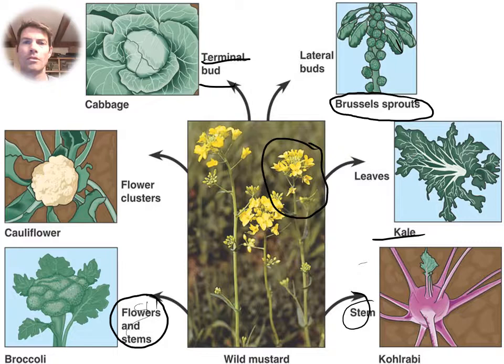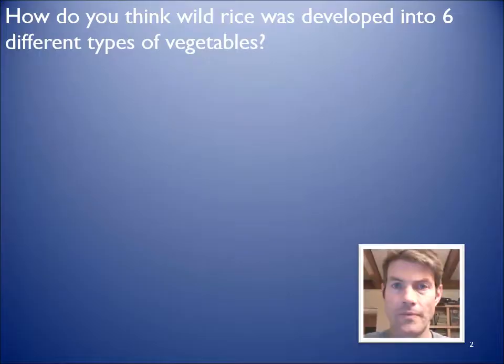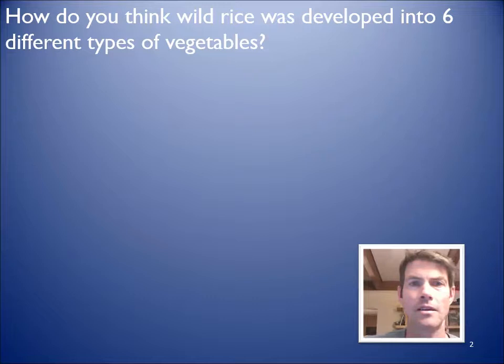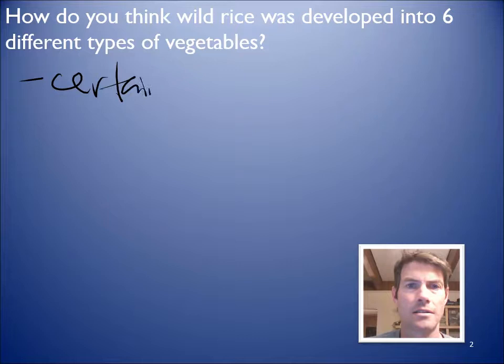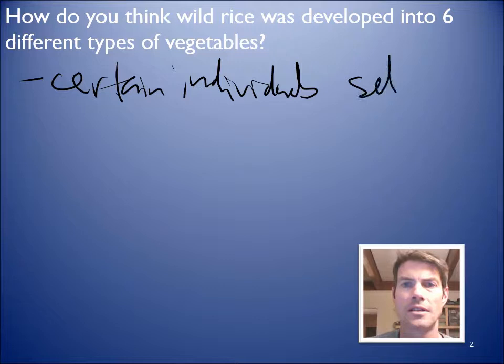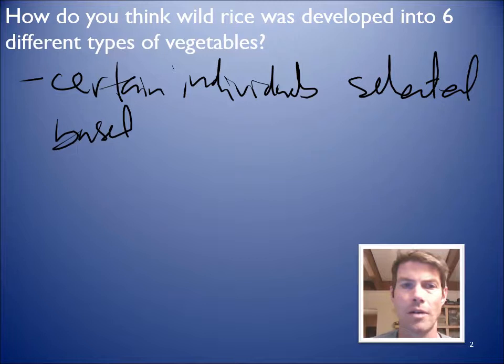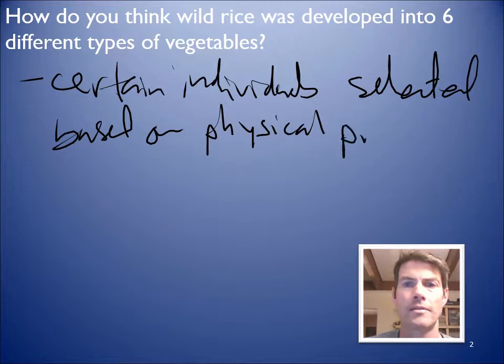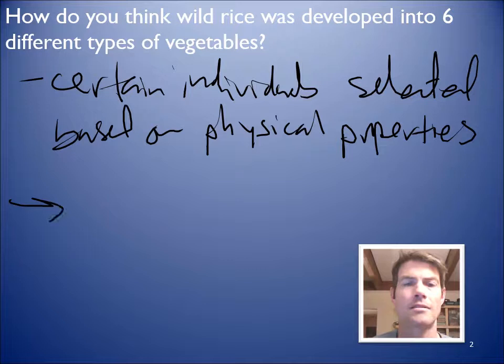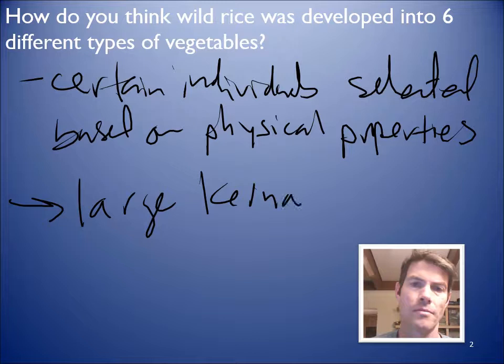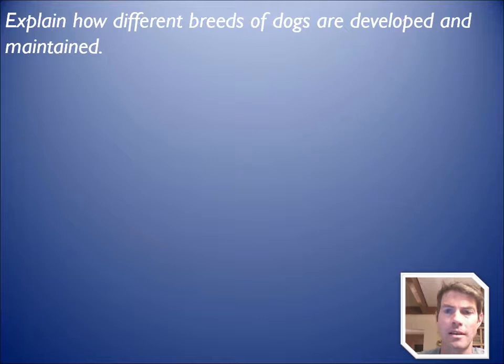And this is with humans acting over decades, which isn't a long time. Think about the earth and how old it is. So how do you think wild rice would develop? Certain individuals selected based on their physical properties - basically a large kernel. And you just keep breeding it, and over time you get your different varieties.